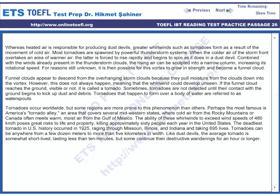When the cooler air of the storm front overtakes an area of warmer air, the latter is forced to rise rapidly and begins to spin as it does in a dust devil. Combined with the winds already present in the thunderstorm clouds, the rising air can be sculpted into a narrow column, increasing its rotational speed. For reasons still unknown, it is then possible for this vortex to grow in strength and become a funnel cloud. Funnel clouds appear to descend from the overhanging storm clouds because they pull moisture from the clouds down into the vortex. However, this does not always happen, meaning that the whirlwind could develop unseen. If the funnel cloud reaches the ground, visible or not, it is called a tornado.